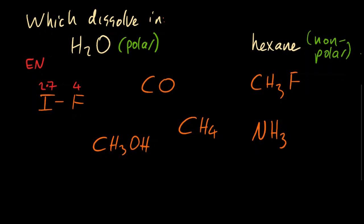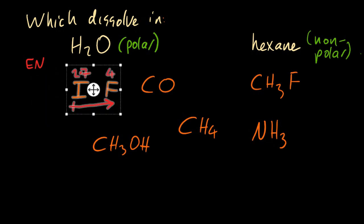Looking at electronegativity difference you can see that iodine monofluoride is polar. One end of the molecule is more negative than the other. Same for carbon monoxide.